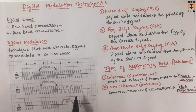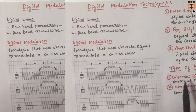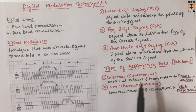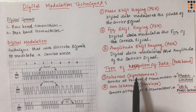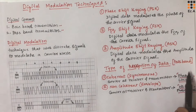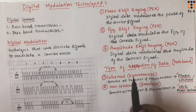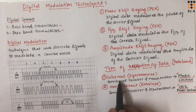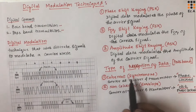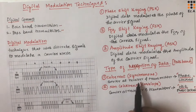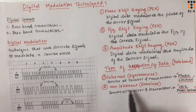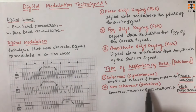These three are the basic types of digital modulation techniques. Now let us understand the types of reception of data in case of passband transmission. There are two types of methods of detection of passband signals. First one is coherent detection, which is also known as synchronous detection. Second one is non-coherent detection, which is also known as envelope detection.